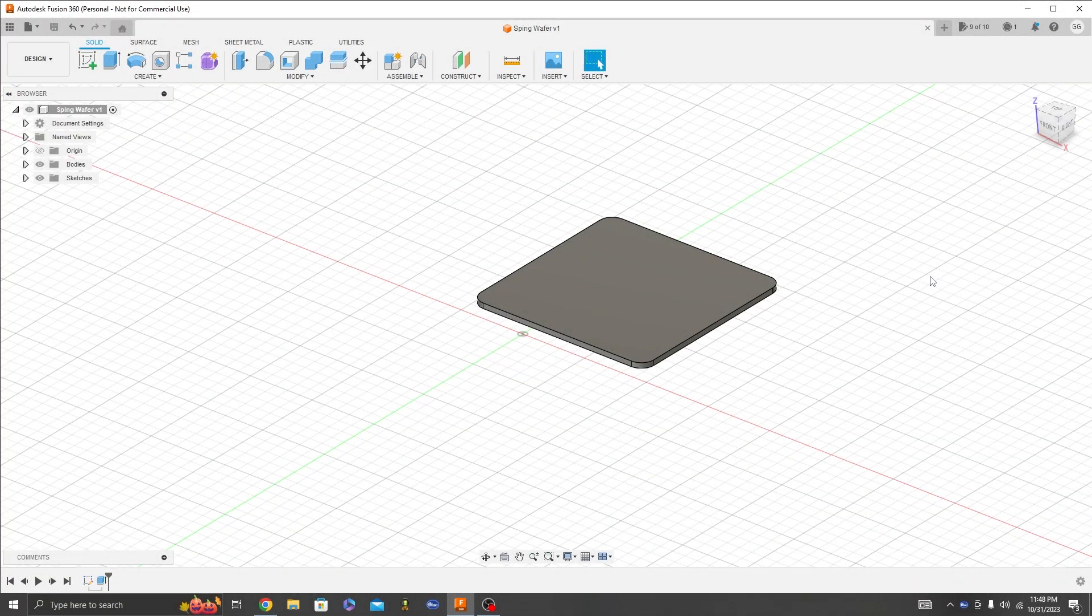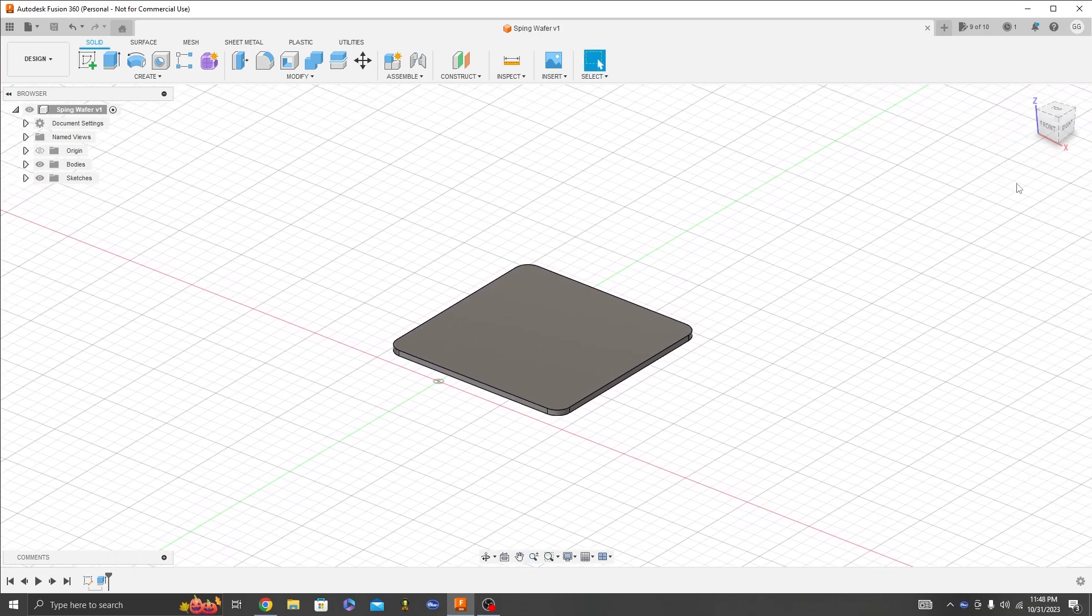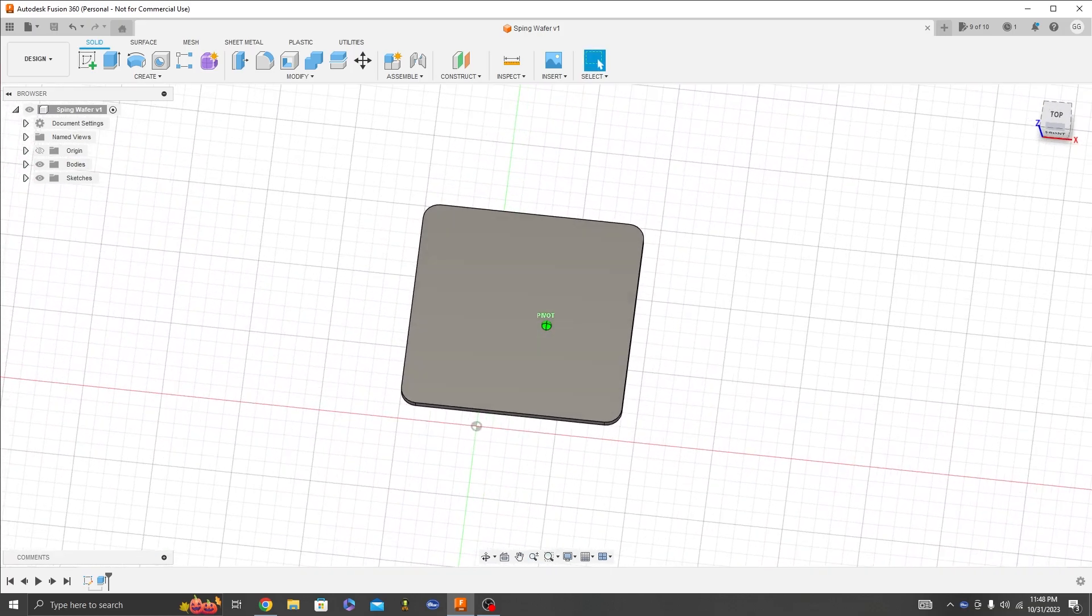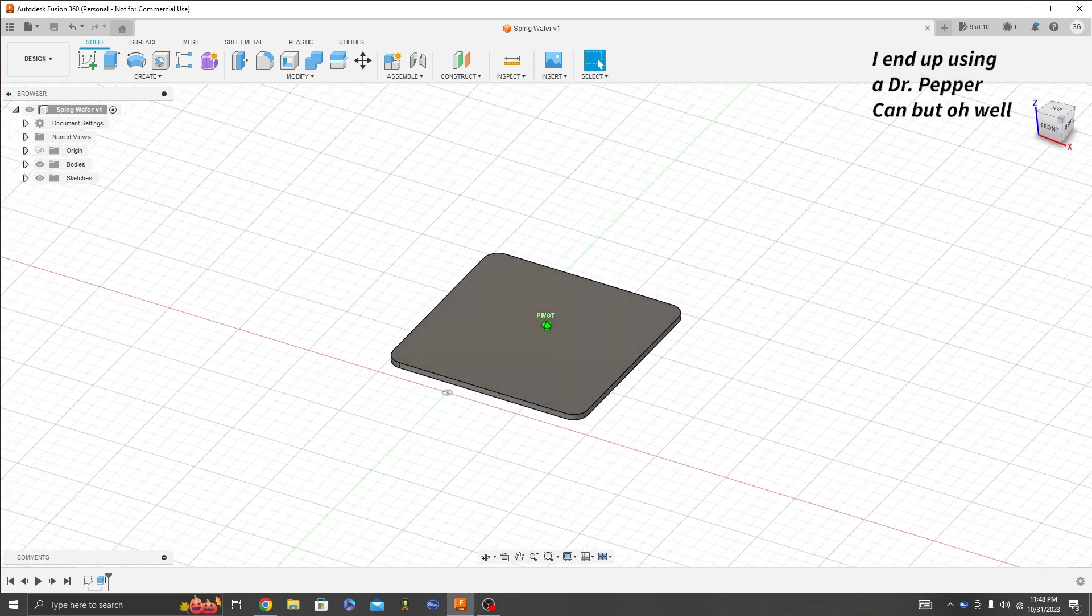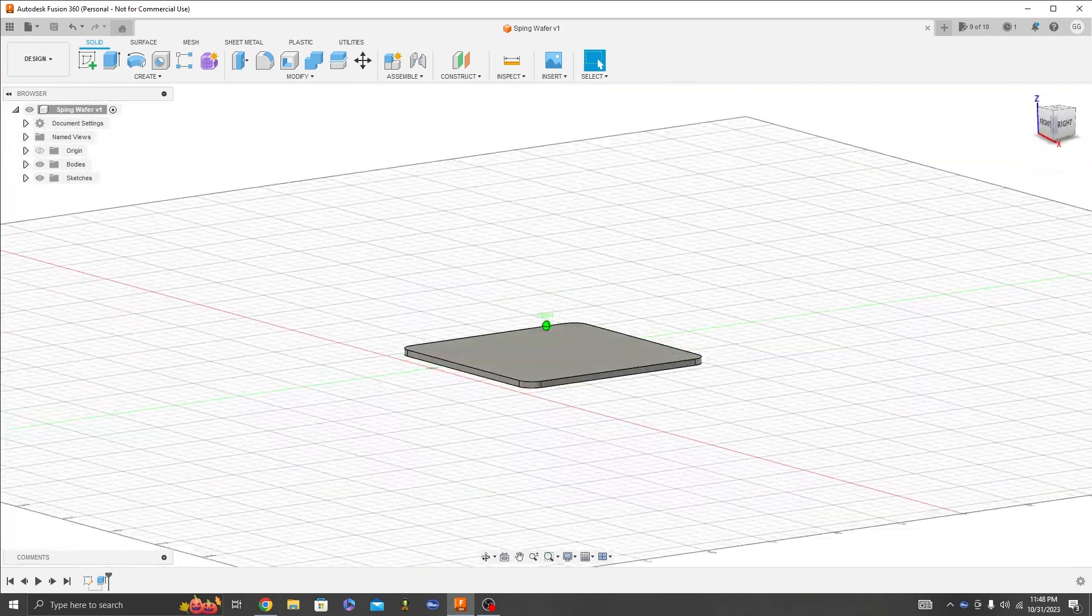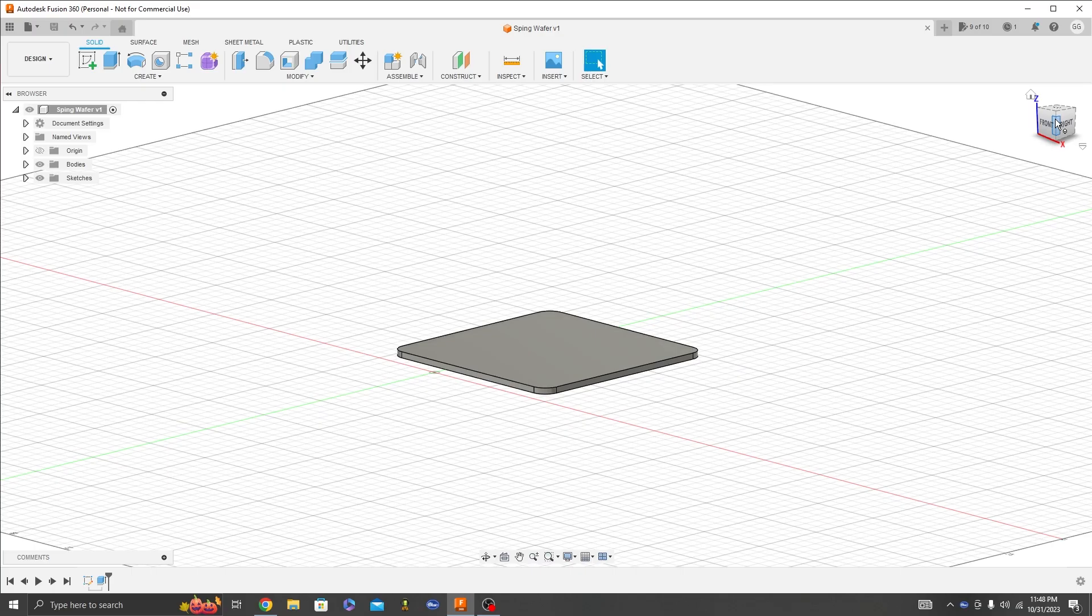So I have gone ahead and designed the little wafer, as I'm going to call it, in Fusion 360. You see it's just a square with some rounded corners and this will hold our Coca-Cola can. So let's go ahead and send that off to the 3D printer.